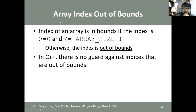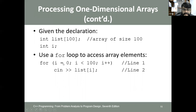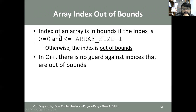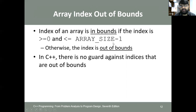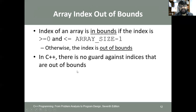Notice the condition is strictly less than 100 — so indices go from 0 to 99, not 100. There is a common error called array index out of bounds. An index is in bounds if it is greater than or equal to zero and less than or equal to array size minus one. C++ has no guard against out-of-bounds indices — it allows access but gives a runtime error when an invalid index is used.